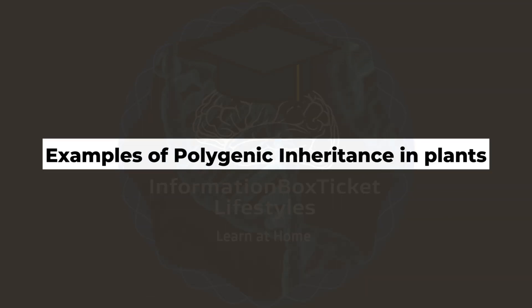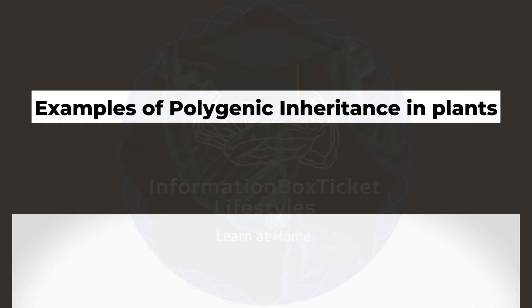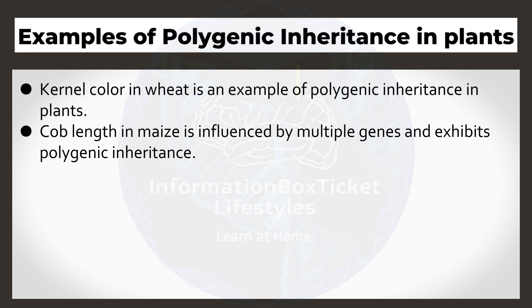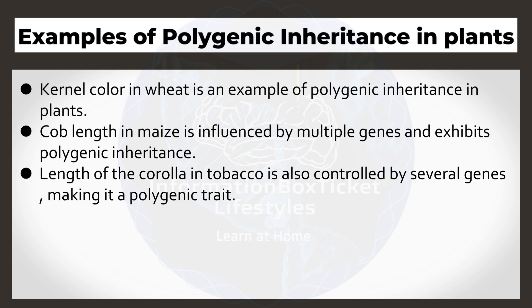Examples of polygenic inheritance in plants include kernel color in wheat, cob length in maize, which is influenced by multiple genes and exhibits polygenic inheritance, and length of the corolla in tobacco, which is also controlled by several genes, making it a polygenic trait.